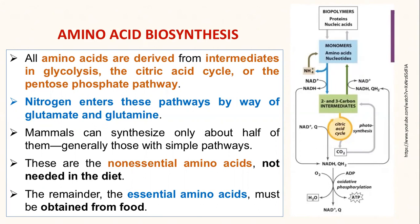The carbon backbone of amino acids is derived from intermediates in glycolysis, the citric acid cycle, or the pentose phosphate pathway. The two and three carbon intermediates from the citric acid cycle go into the formation of the monomer units of amino acids, which are used to make proteins as well as nucleic acids and nucleotides.